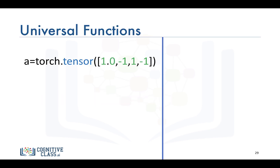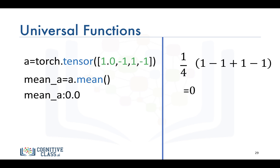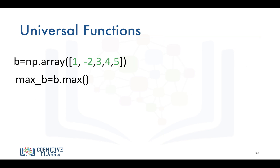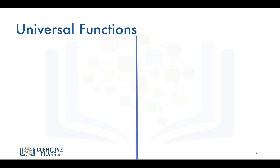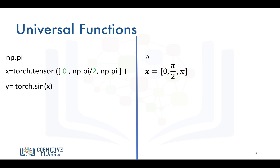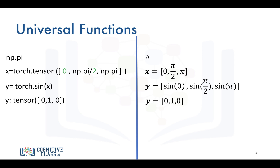Let's go over some universal functions. We can apply basic operations to a tensor, such as calculating the mean — which is basically the average — and finding the maximum element, in this case 5. We can also use NumPy's pi to create the value pi, create a torch tensor, and then apply the sine function to every element in the tensor assigning the result to y. Symbolically it looks like that, and that's the final result.